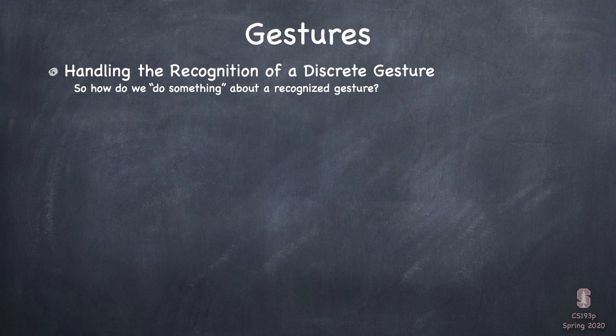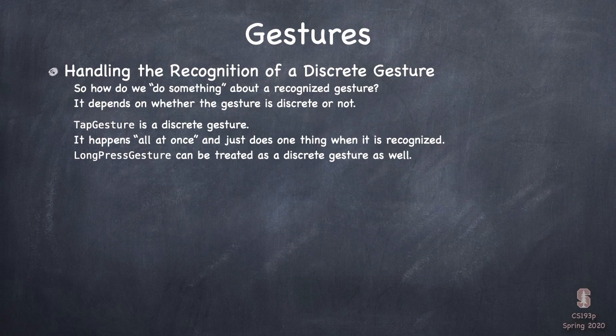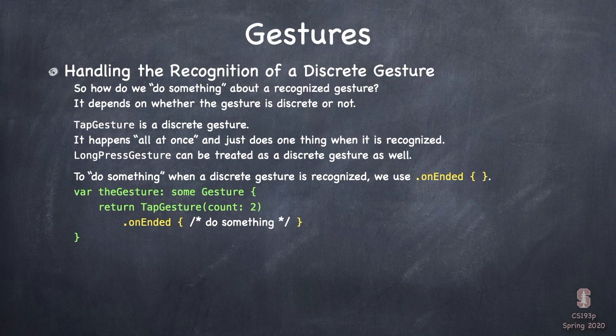The next step is to explain how to handle the gesture — it depends on the kind of gesture. Some gestures are discrete, like TapGesture, and LongPressGesture can be discrete — the tap happens and then you go do something. That's different than a pinch or a drag which happen over time. For discrete gestures, you call the function `.onEnded` on your gesture, which takes a closure, and in that closure you do whatever you want when that tap ends — when the finger comes back up.